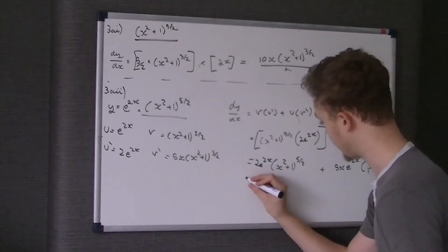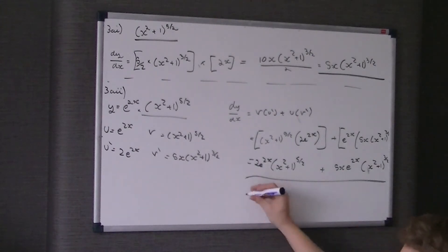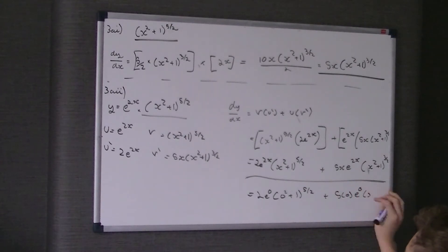This becomes 2e^(2x)(x² + 1)^(5/2) plus 5xe^(2x)(x² + 1)^(3/2). You can't simplify that, so you just leave it as that. But then it says find the value of dy/dx when x = 0.